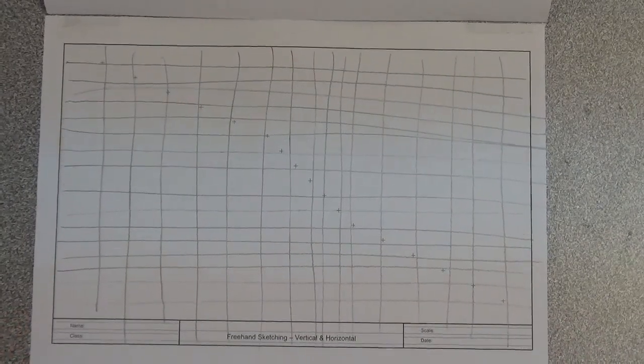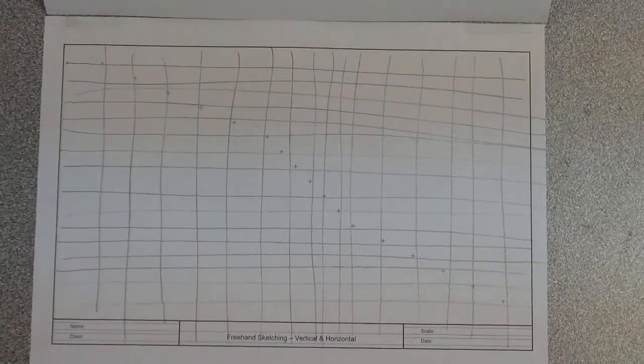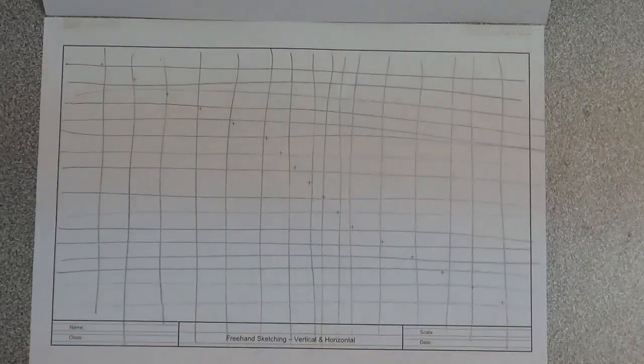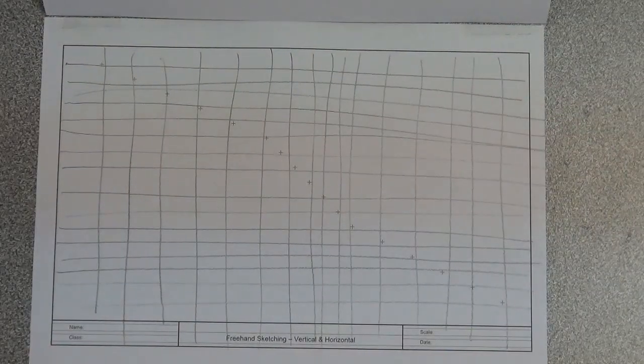And there we have it. That's the exercise drawing vertical and horizontal lines. Ideally you're trying to get them through the crosses if you can, or as close to it if you can.